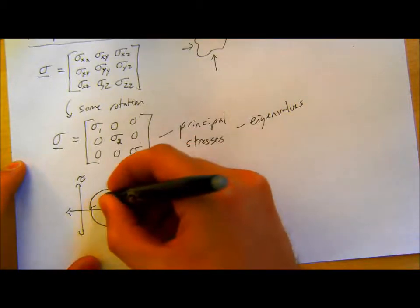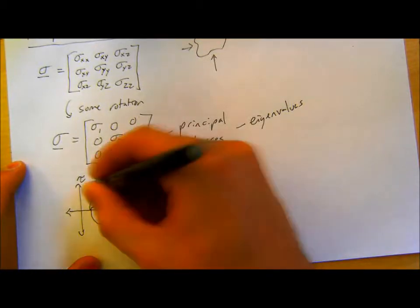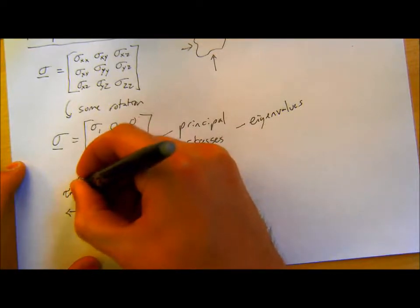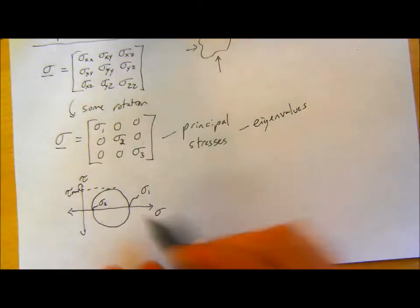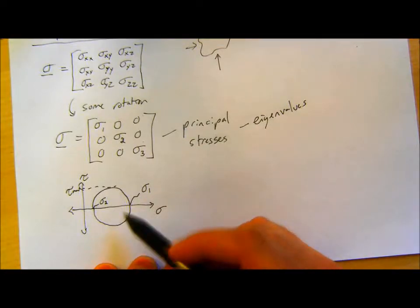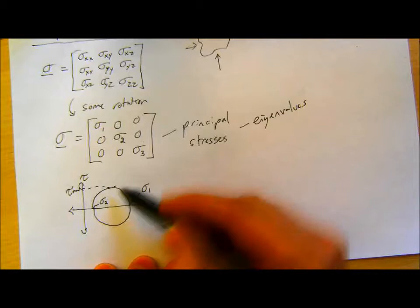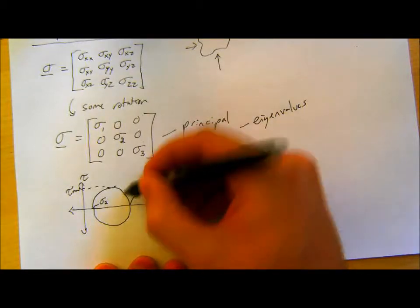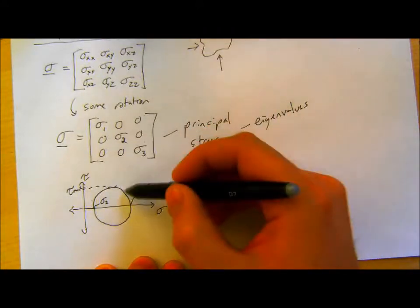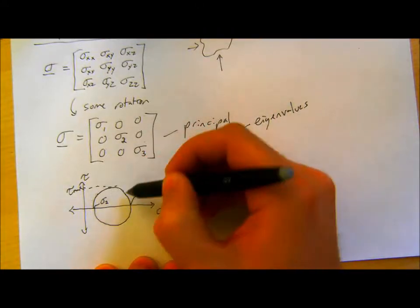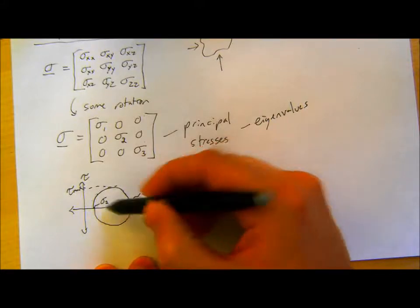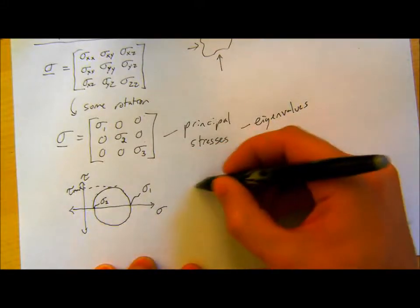So if you have your stress tensor, at some point — if there's some random angle where you have all of your stress values in there — you can always rotate that out, and there's some new angle where your stress in 2D is just your principal stresses. That's what this represents: these two points.